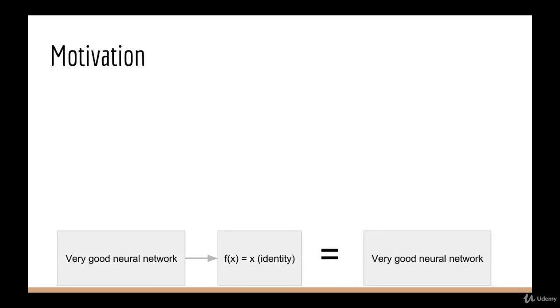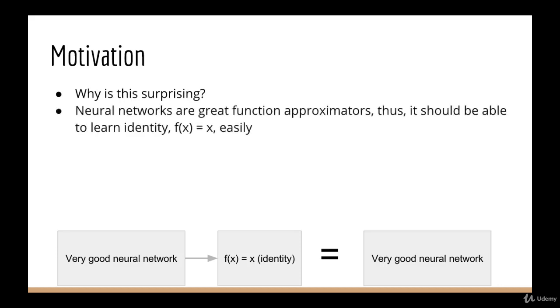Let me explain why this is surprising. Suppose we have a neural network that performs very well. Now as we recall, neural networks are great function approximators. Therefore, a neural network should have no problem at all learning the identity function. In other words, that just means whatever I put in is the same thing I get out. f(x) = x. As this is such a trivial function, you would assume that it is very easy to learn.